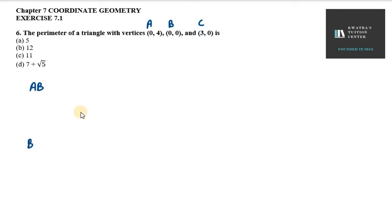Now, we don't know AB, BC, and CA distance. So we will apply AB first. In AB, we will apply distance formula. So, the distance formula you know is x2 minus x1 whole square plus y2 minus y1 whole square.